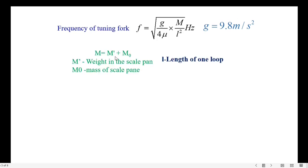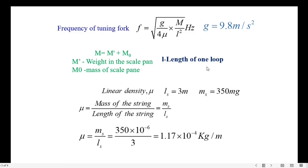M equals m prime plus m naught. Here m prime is the weight in the scale pan and m naught is mass of scale pan. This is length l, which represents length of one loop. Also we have mu, which is known as linear density. It is the ratio of mass of the string to the length of the string.